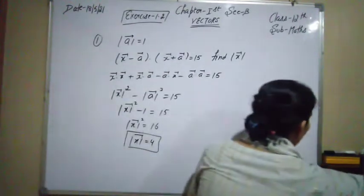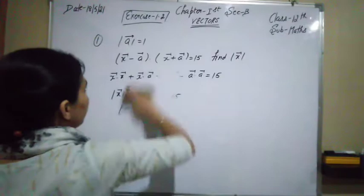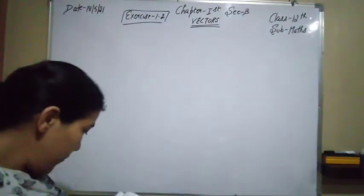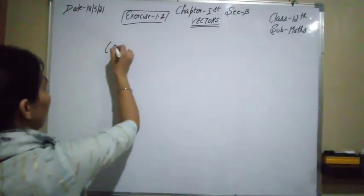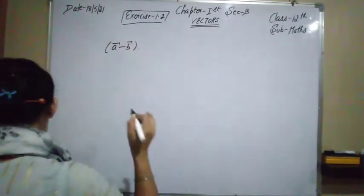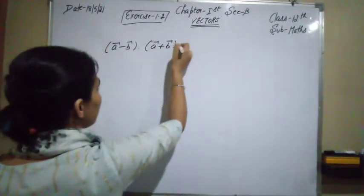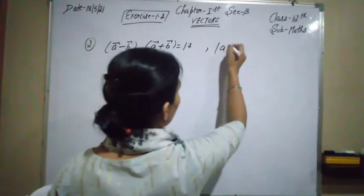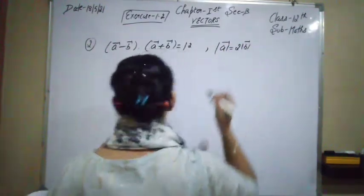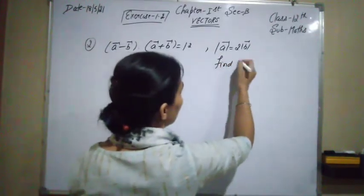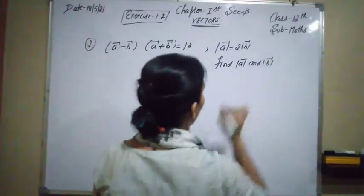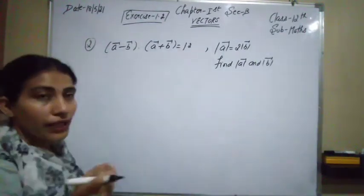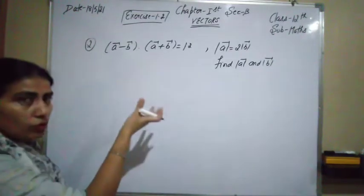Now for the second question: (a⃗ − b⃗) · (a⃗ + b⃗) = 12 is given, and |a⃗| = 2|b⃗|. We have to find the magnitudes of a⃗ and b⃗. We expand the dot product: a⃗·a⃗ + a⃗·b⃗ − b⃗·a⃗ − b⃗·b⃗ = 12.